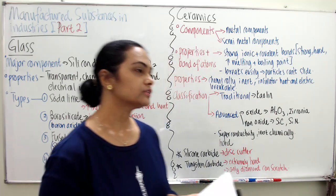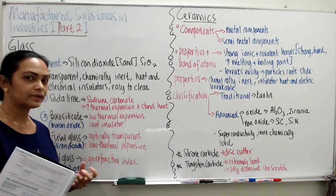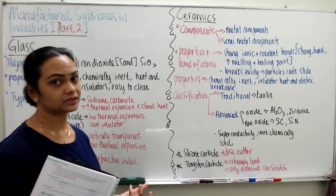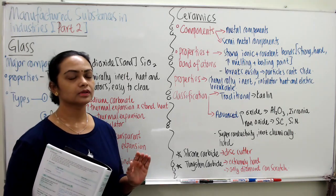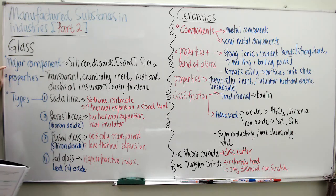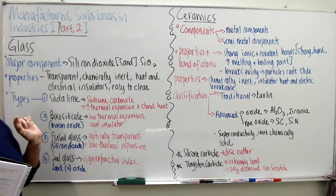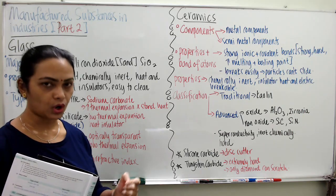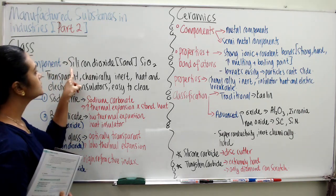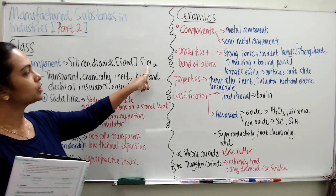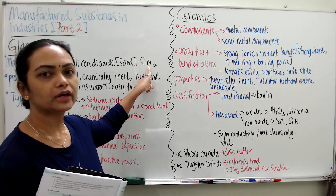So what is glass actually? Glass is a substance, so there is no single meaning to it. The major component of glass is actually sand, which is called silicon dioxide (SiO₂) in chemical terms. This is the molecular formula of silicon dioxide.